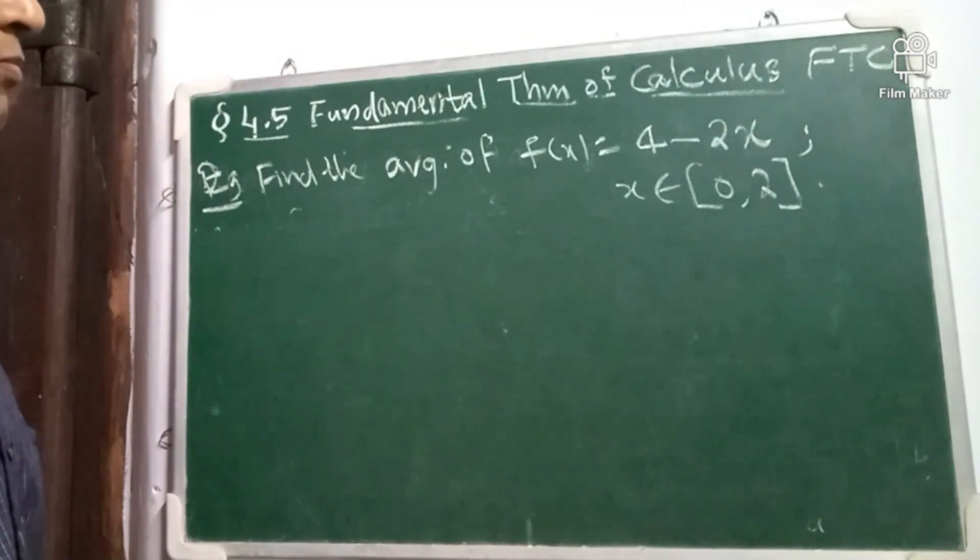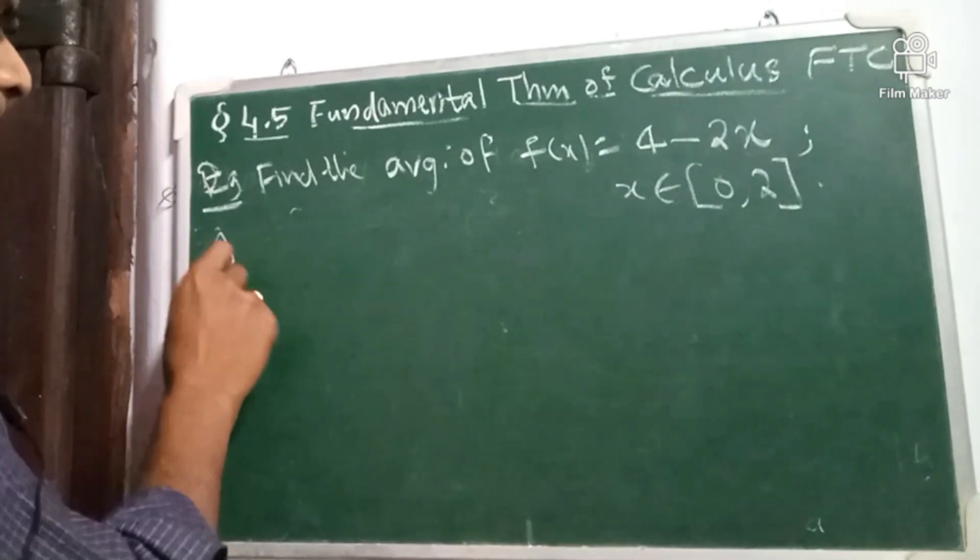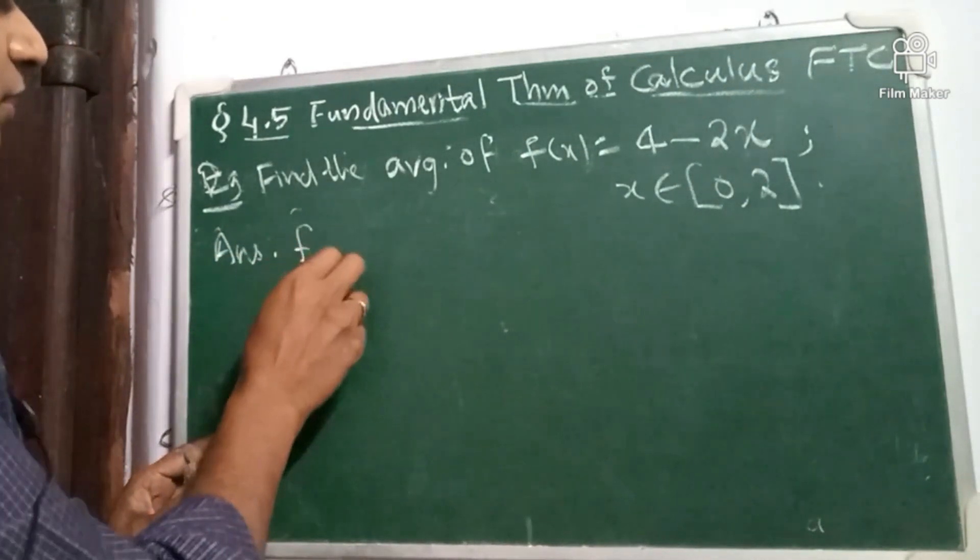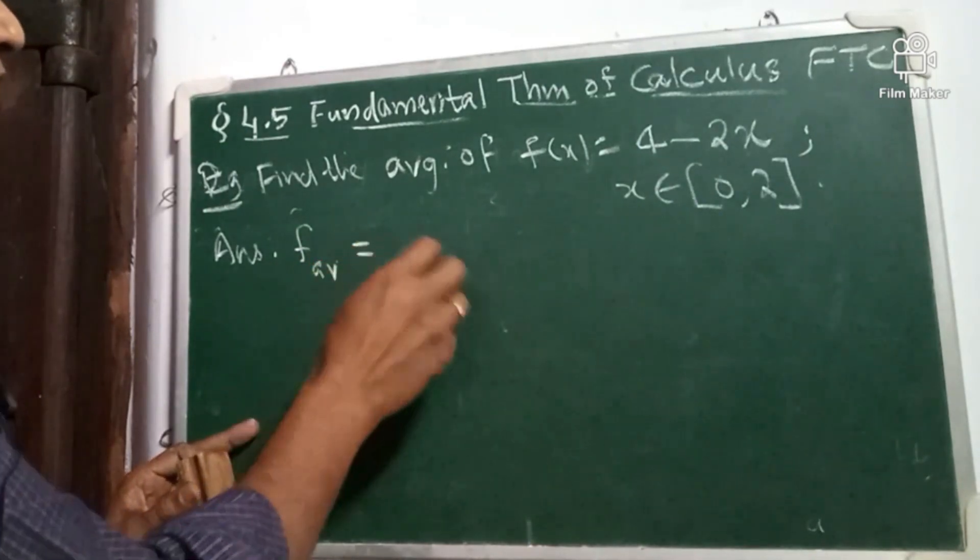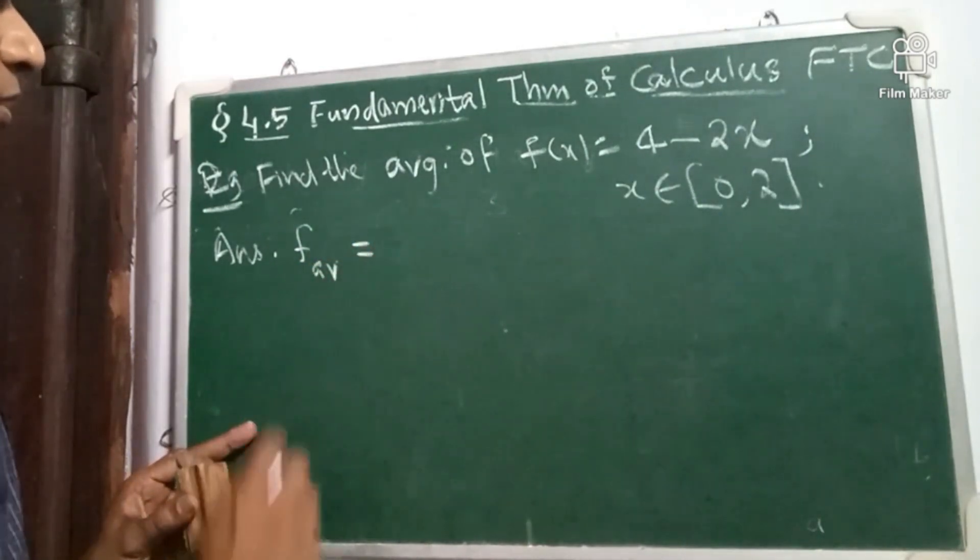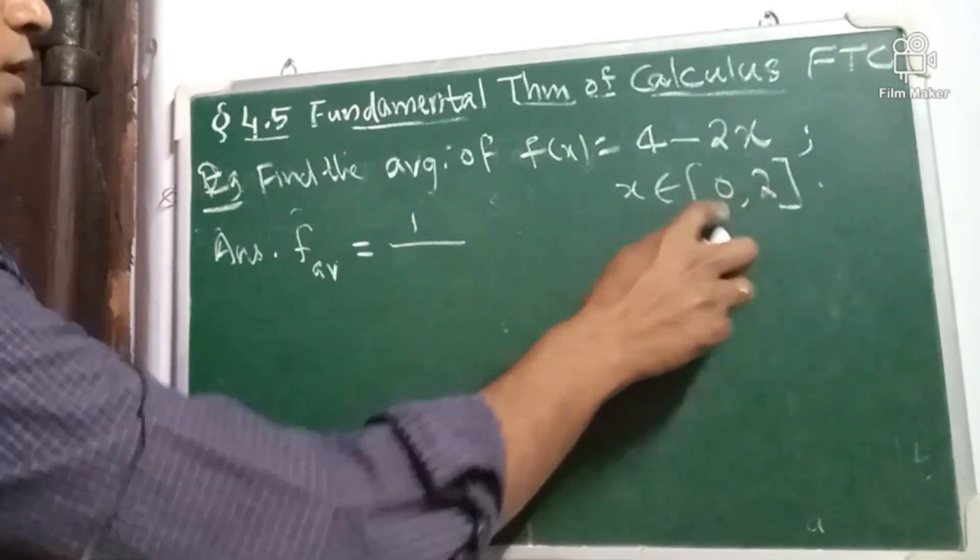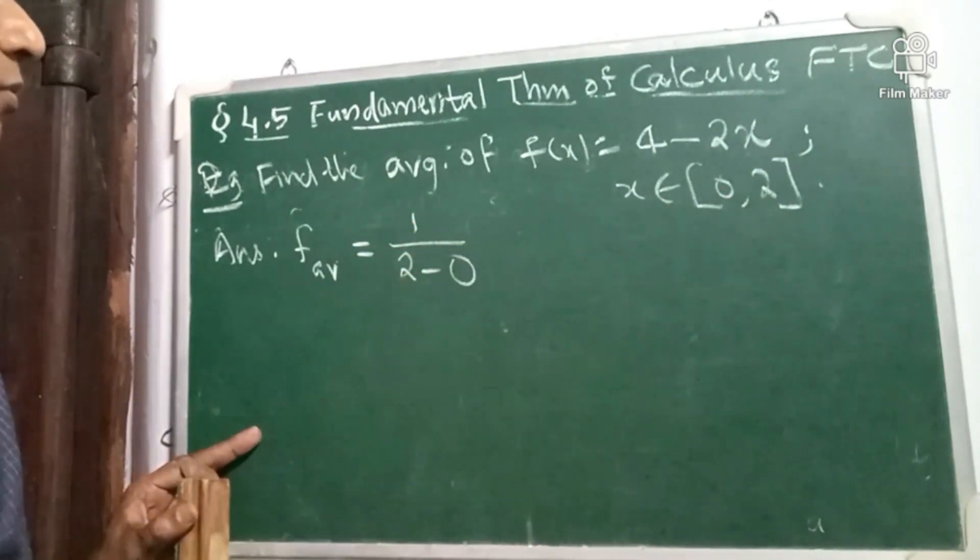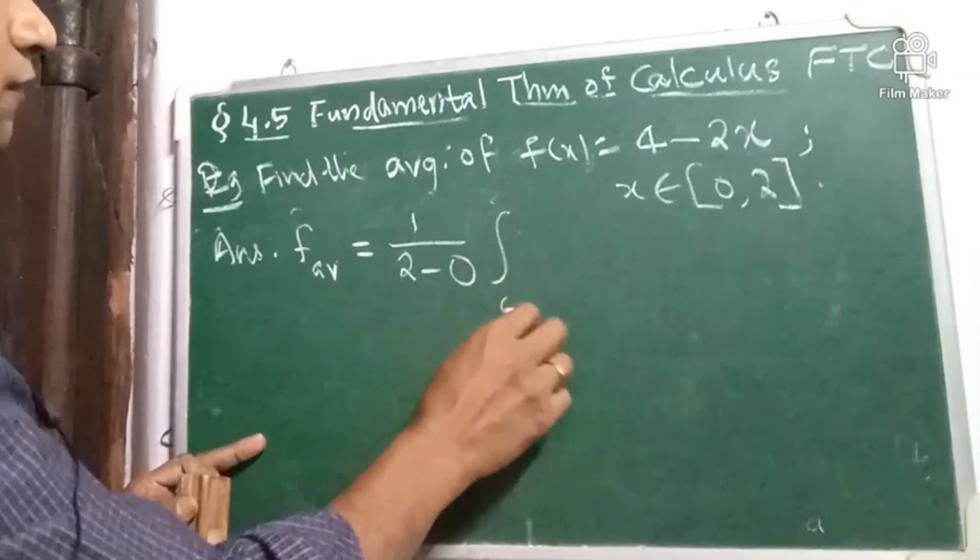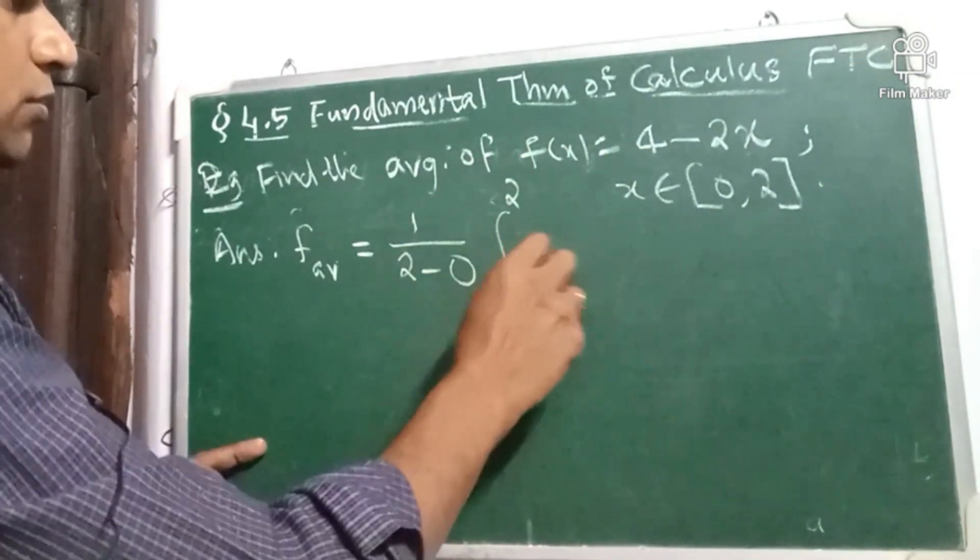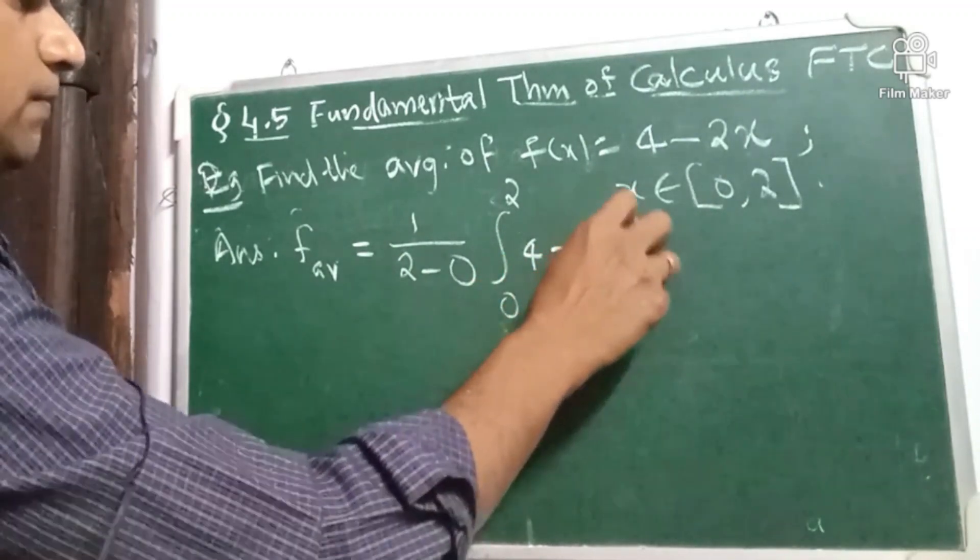This is another function. So answer, f average equal to by formula. So by formula, it is 1 by b minus a, 2 minus 0, integral 0 to 2, f(x) dx. So 4 minus 2x dx.